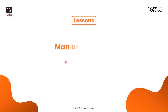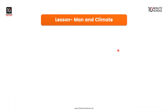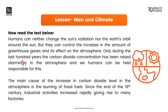This unit is called Man and Climate. Humans can neither change the sun's radiation nor the Earth's orbit around the sun. But they can control the increase in the amount of greenhouse gases and its effect on the atmosphere.